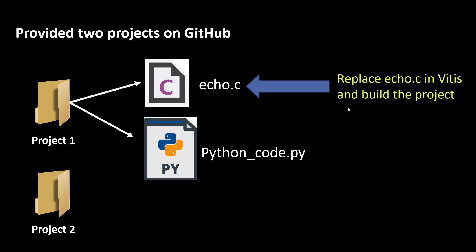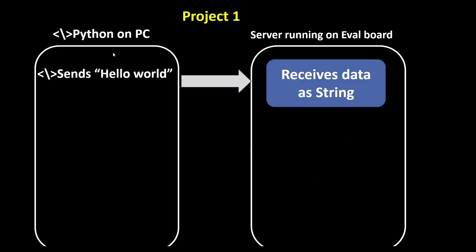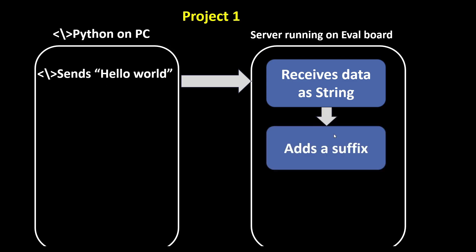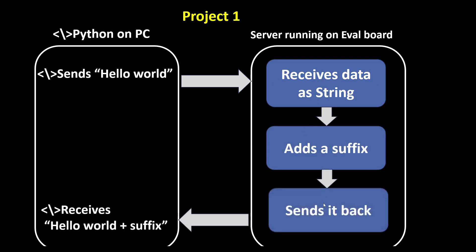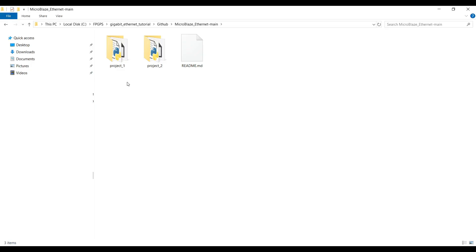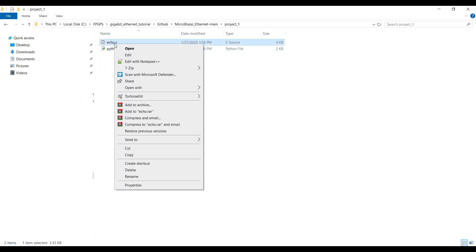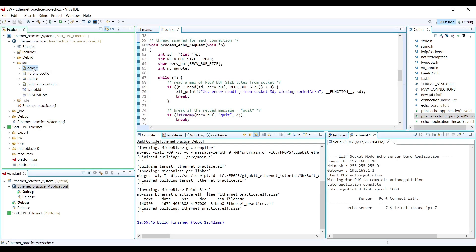Each project contains two important files: echo.c and python_code.py. We need to replace the echo.c in the Vitis application and rebuild the project, then run the python_code.py on the PC as the client. In the first project, the Python code running as the client on the PC will send a string to our server, then the server will add a suffix — another piece of string — to the received data and send it back to the Python client, which will then display the received data.